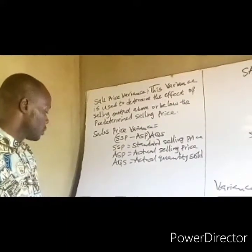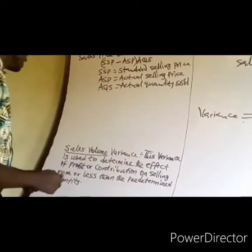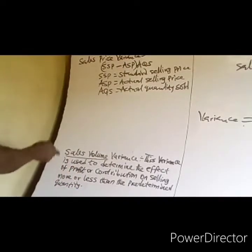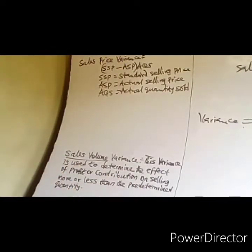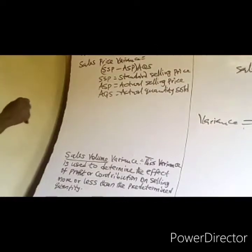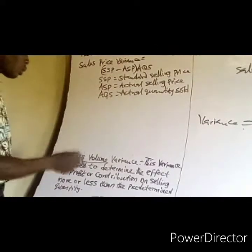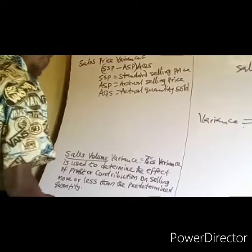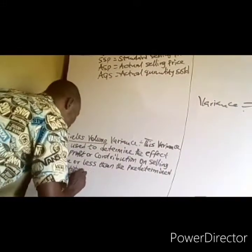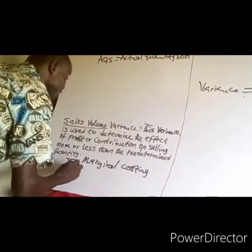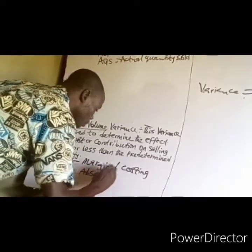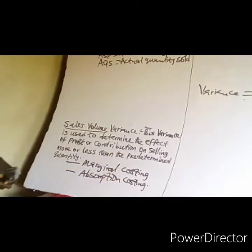The sales margin volume variance is used to determine the effects on profits or contribution of selling more or less than the predetermined quantities. There are two schools of thought as to the calculation of sales volume variance: the marginal costing school of thought and the absorption costing school of thought.